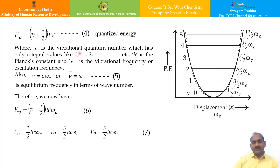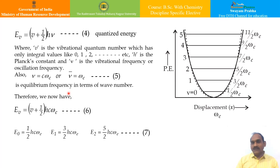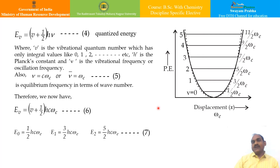Here, v is the vibrational quantum number with integral values 0, 1, 2, 3, and so on; h is Planck's constant; and ν is the vibrational frequency. We can calculate the wave number, which is the equilibrium frequency in terms of wave number, and substitute to find the expression for vibrational energy. Putting different values of v, we get energy levels E0, E1, E2 at ½hcωe, 3/2 hcωe, 5/2 hcωe, and so on. Each two adjacent vibrational energy levels are separated by an equal amount of energy.